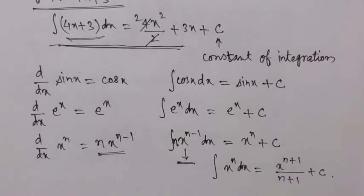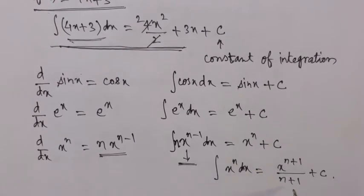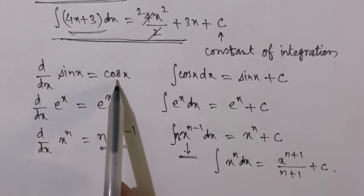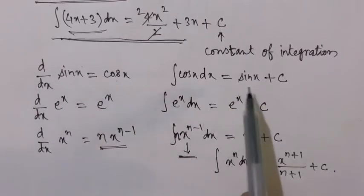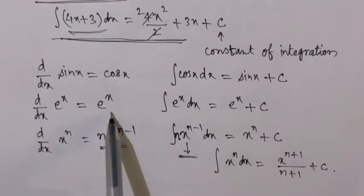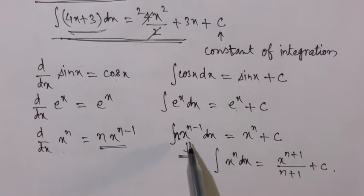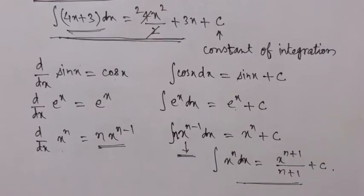To remember this: in differentiation we bring the power to the front and reduce the power by one. In integration we do the reverse — we first increase the power: x^n becomes x^(n+1), then divide by the increased power, giving x^(n+1)/(n+1), and we always add plus c. So the integration of x^n is x^(n+1)/(n+1) + c. Since sin x differentiates to cos x, cos x integrates to sin x. Since e^x differentiates to e^x, e^x integrates to e^x. Since x^n differentiates to n·x^(n-1), n·x^(n-1) integrates to x^n + c.